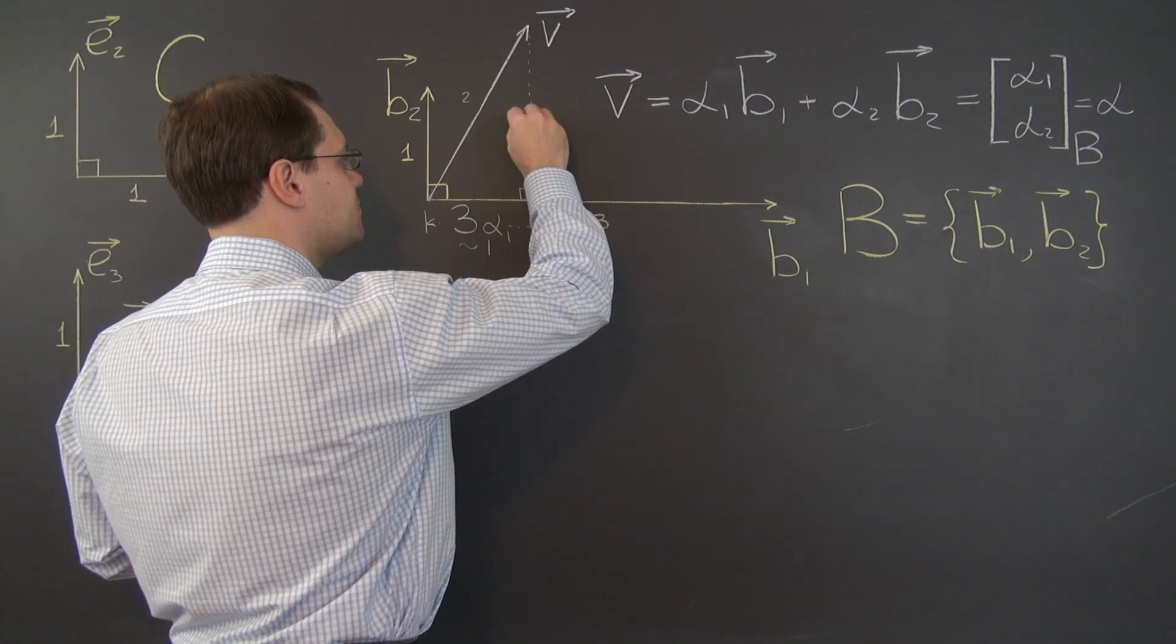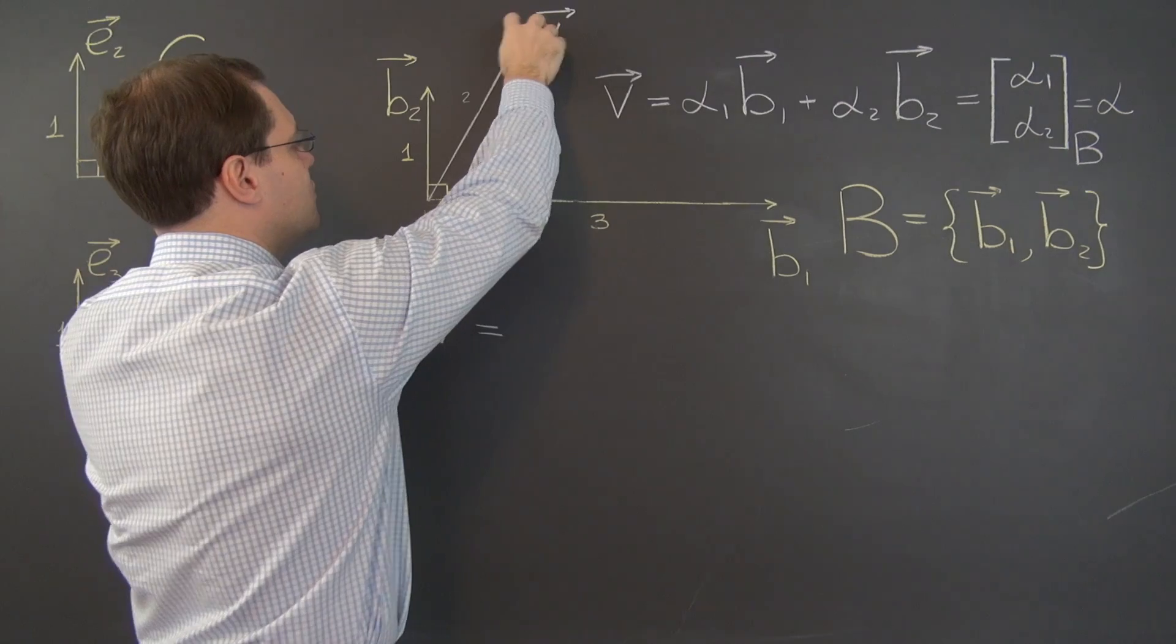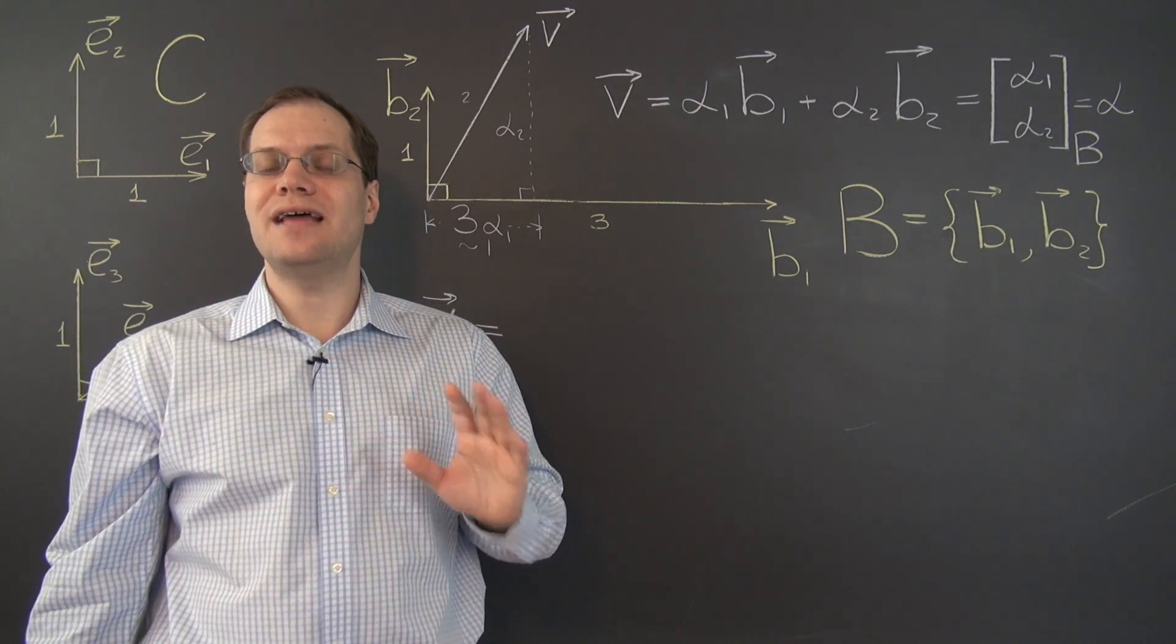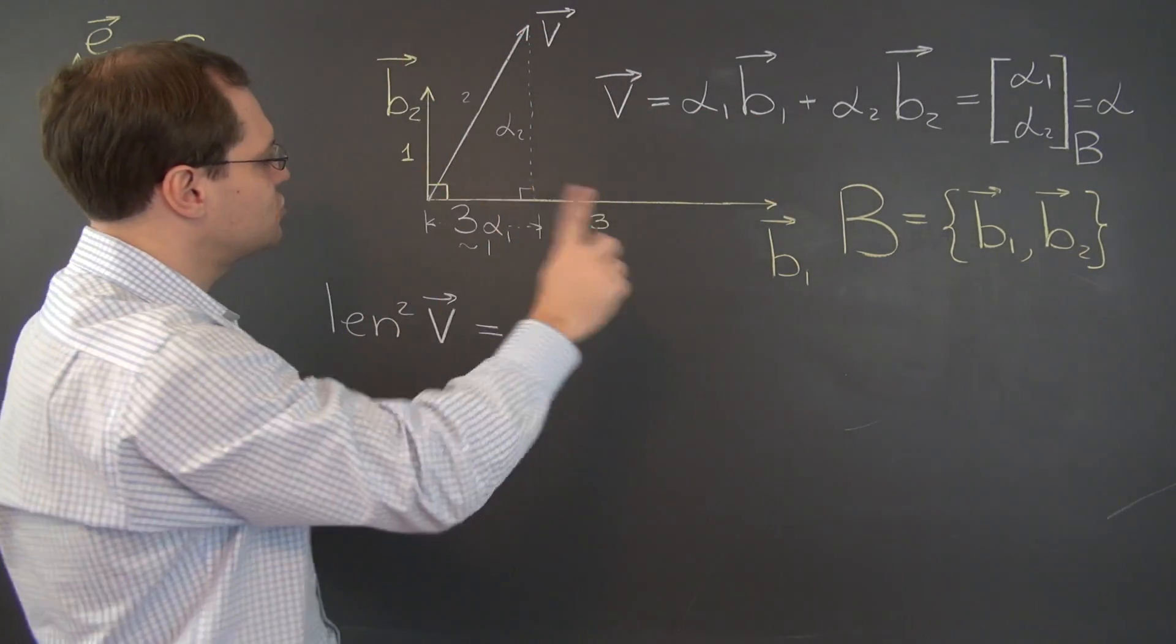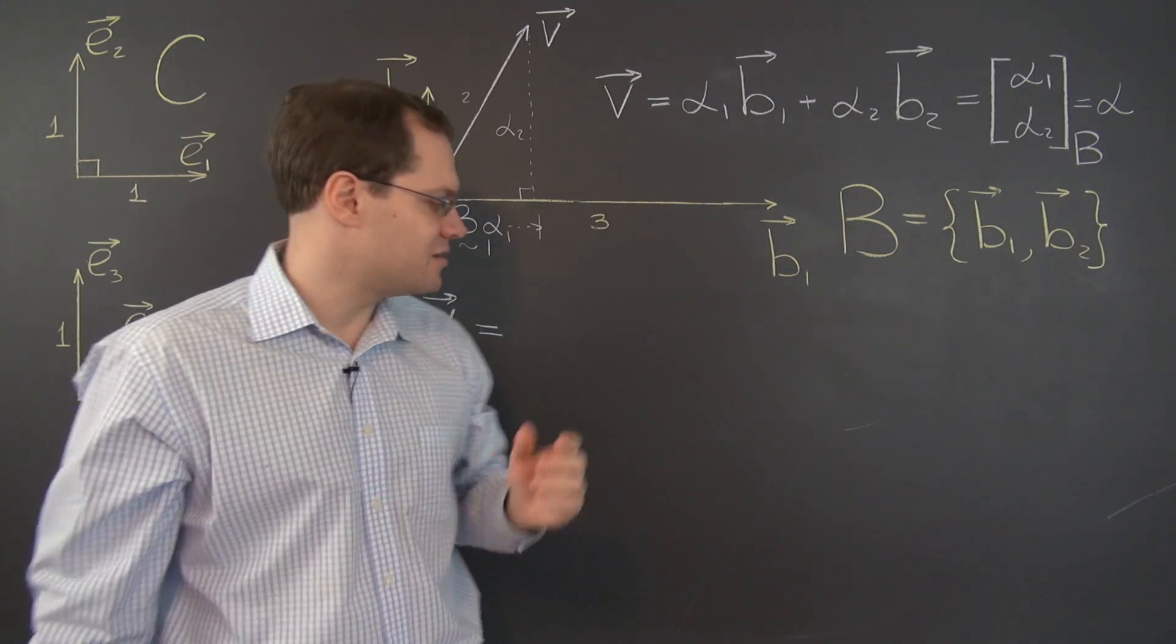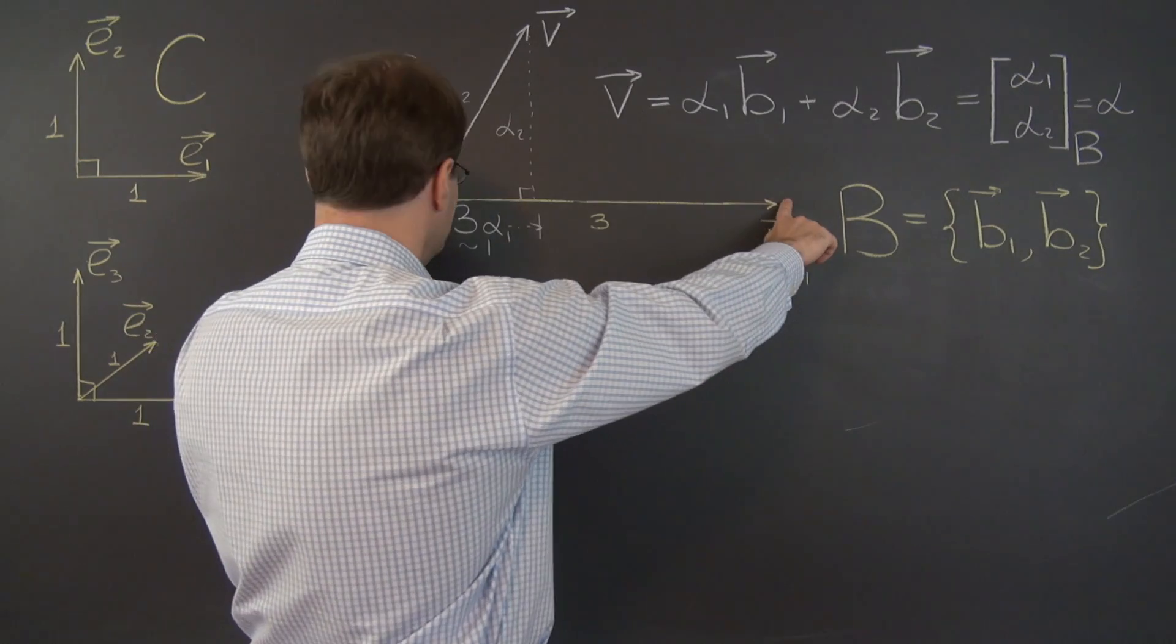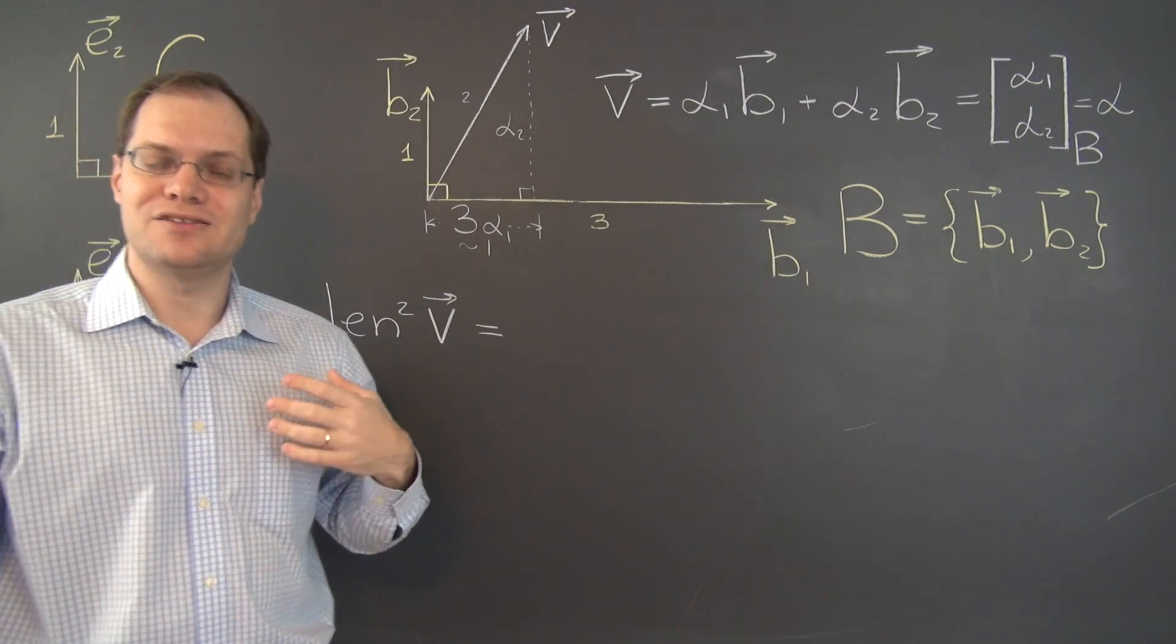Just as before, the length of this segment right here is alpha 2. That's because the length of b2 is still 1. So that hasn't changed, so this component hasn't changed, and what the length of this segment is in terms of the component hasn't changed either. Here is where all the change is, because that was the only change compared to the basis we had before.